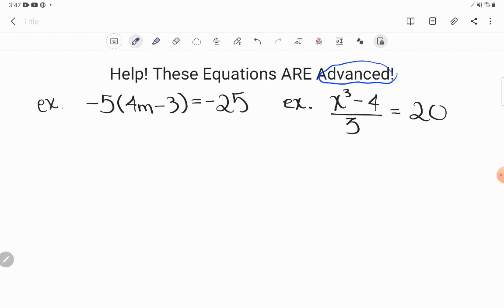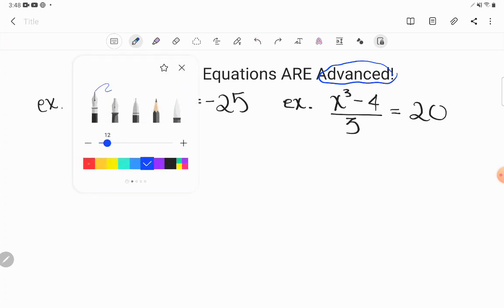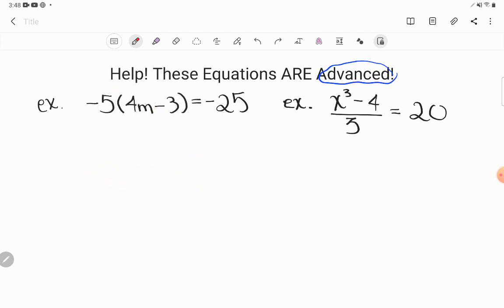Let's look at the first example. Negative 5 times the quantity of 4m minus 3 is equal to negative 25. Notice I said negative 5 times the quantity - see how the negative 5 is shoved up against that parentheses? That negative 5 is multiplying times the whole grouping, and most students go wrong right off the bat.